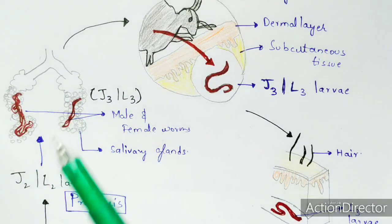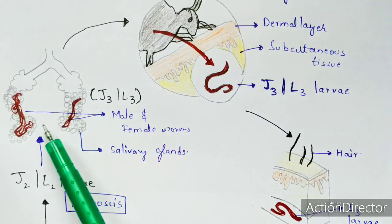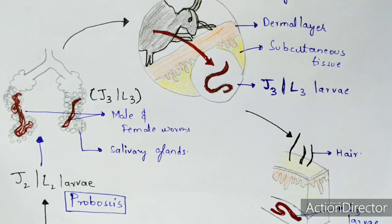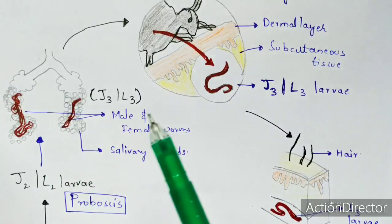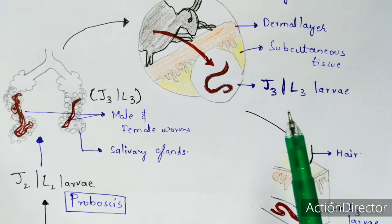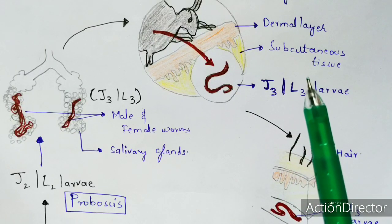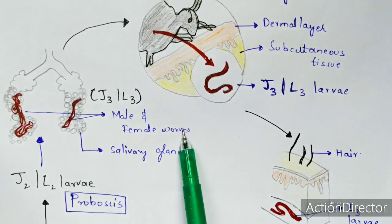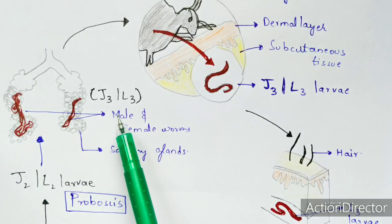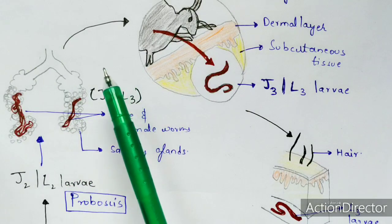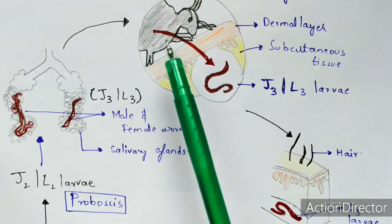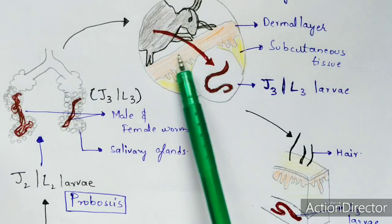In the salivary glands, J2 or L2 larvae transform into J3 or L3 larvae. These worms are in an inactive form — they cannot mate at this stage. Mating only occurs in the human host. The J3 or L3 larvae, both male and female, travel to the mouth of the black fly.